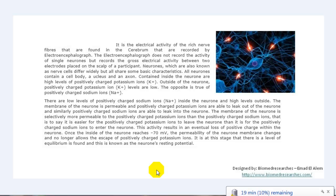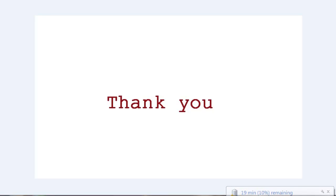Once the inside of the neuron reaches minus 70 mV, the permeability of the neuron membrane changes and no longer allows the escape of positively charged potassium ions. It is at this stage that a level of equilibrium is found, known as the neuron's resting potential. Hopefully by now we have understood the electrical activity of the brain, and we will see you soon on our next episode of Understanding EEG. Thank you, have a good day, and stay tuned.